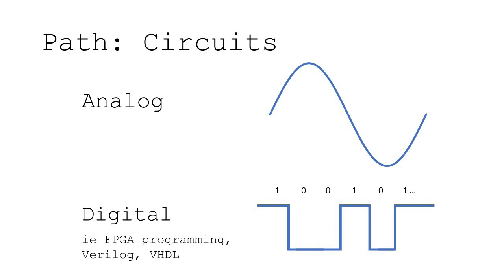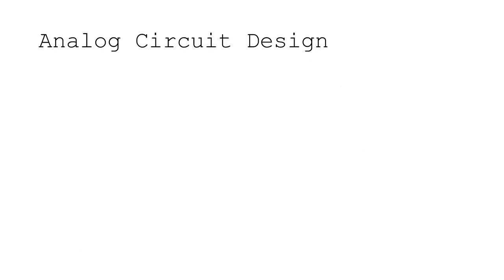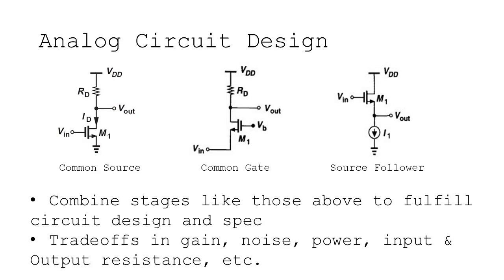Shifting focus back to analog circuits — you learn about all these different circuit configurations that have their own purpose. For instance, you learn about amplifier stages, basic stages like common source and source followers, and how to put these stages together to meet spec. From these design courses you learn how to trade off quantities like gain, noise, power, input and output resistance, and how to use feedback.